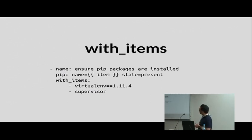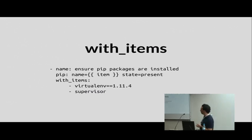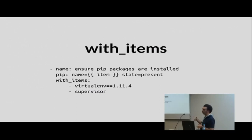One thing we use a lot is 'with_items'. Sometimes you want to run the same action multiple times — for example, on many packages. Instead of copy-pasting the same action for every package, you can use with_items, which is basically a loop. In this case, we want to install virtualenv and supervisor with pip.